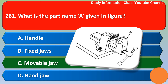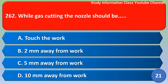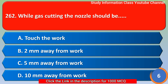Next question: while gas cutting, the nozzle should be — Option A: touch the work, Option B: 2mm away from work, Option C: 5mm away from work, Option D: 10mm away from work. The right answer is Option C, 5mm away from the work.